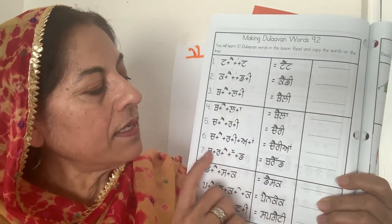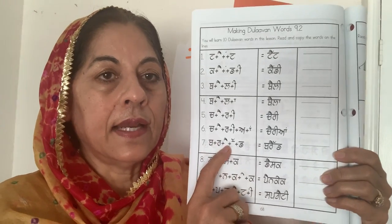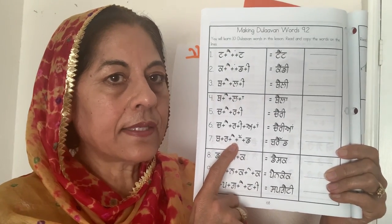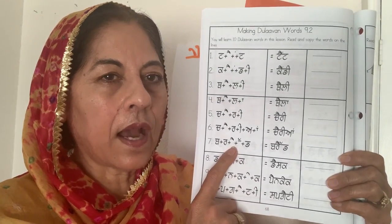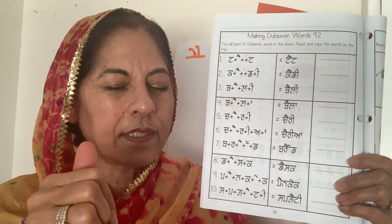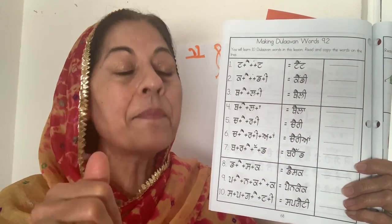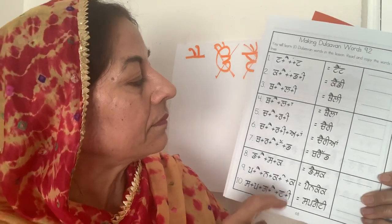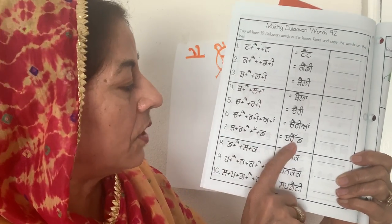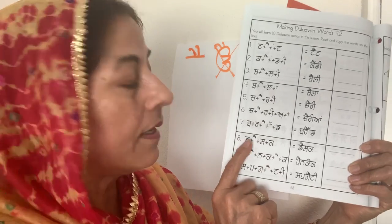If we didn't write the Adak, we would say 'Brad,' and Brad is a different word — it's like a thumbtack, not sharp at the back. You would use it in the wall. So you already know the Adak — Adak changes the words.